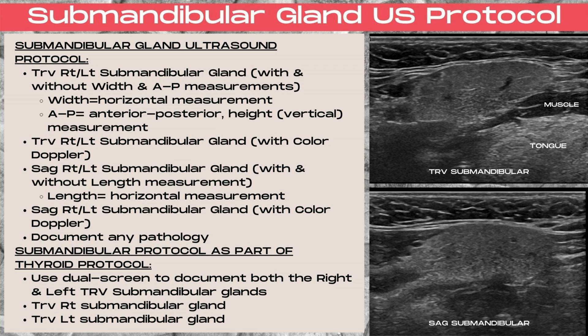When imaged separately, you want to take a picture of the transverse right or left submandibular gland with and without width and AP measurements. Note that width is going to be a horizontal measurement, and the AP measurement is going to be a vertical measurement on ultrasound. You also want transverse right and left submandibular gland images with color Doppler.